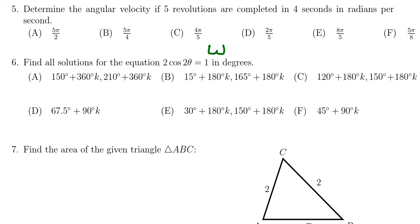So our angular velocity omega is given as five revolutions per four seconds. That's what we're told. If we want to convert to radians per second, it's already in seconds, so that's good, but the angle measure needs to be in radians.